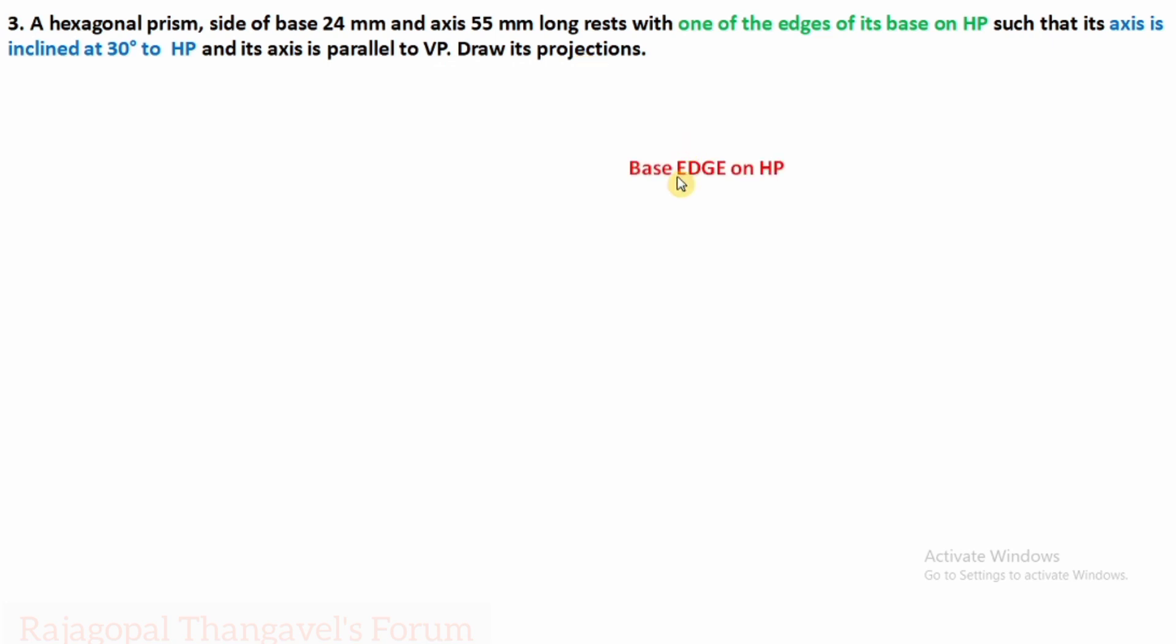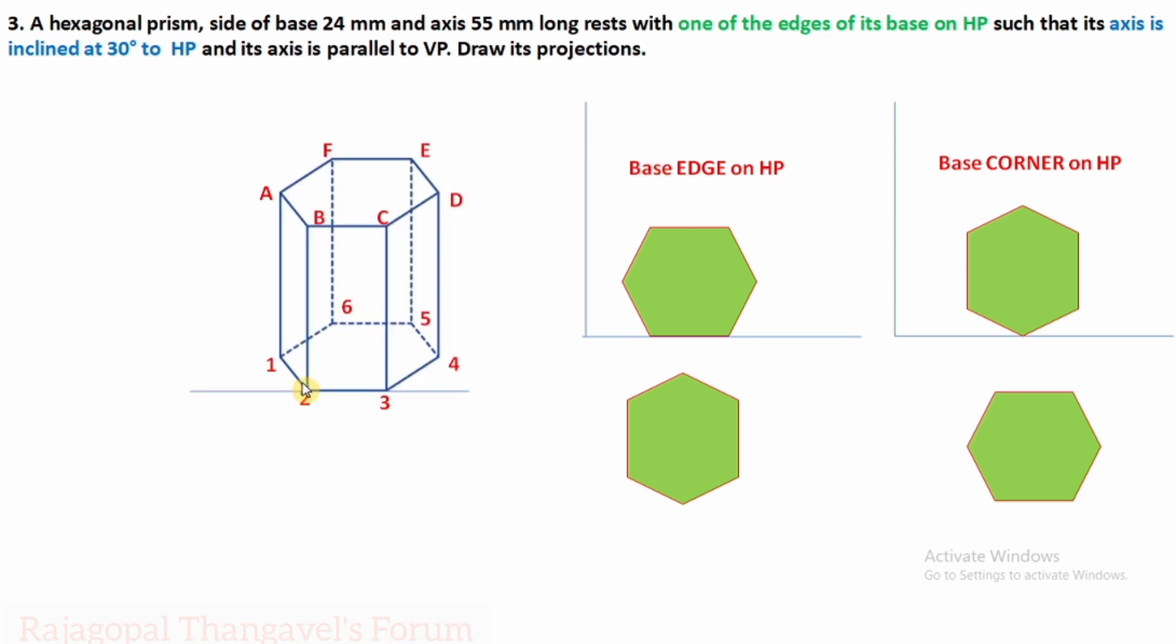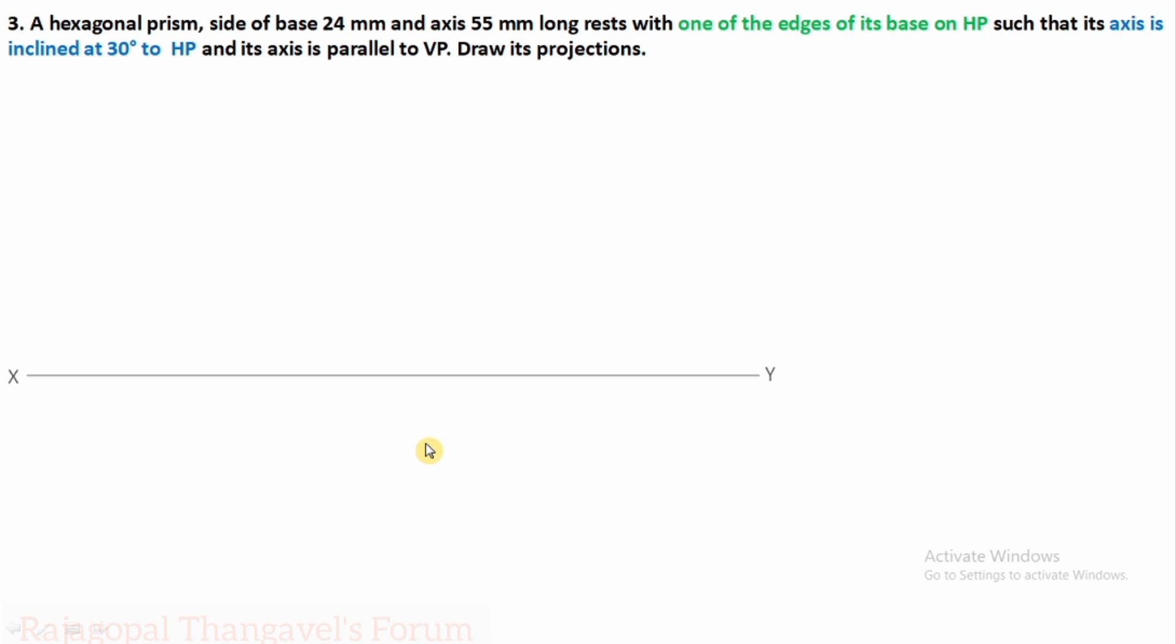Base edge on HP. Draw one edge on HP. We are having only two options in hexagon - maybe edge on HP or hexagon corner on HP. If it is corner on HP, this is the position. After rotating 90 degrees it will become like this. As per our condition, edge is on HP. So this edge, after rotating 90 degrees, becomes perpendicular to XY. Now what about the actual solid? This edge of the base is on HP. After rotating 90 degrees it will become like this. So we know what is the simple position of the hexagon. Draw the hexagon as per our position.